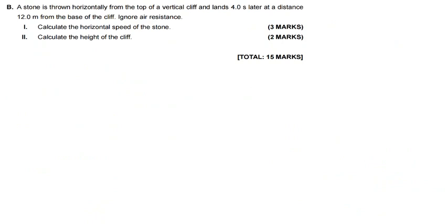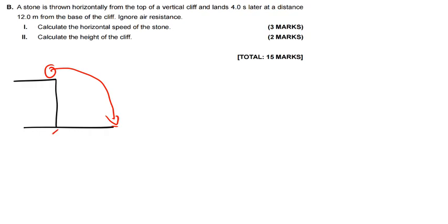The last part of question 2: a stone is thrown horizontally from the top of a vertical cliff and lands 4 seconds later at a distance of 12 meters from the base of the cliff. Ignore air resistance. This is Case 1 — you throw an object horizontally from a height. The time is 4.0 seconds and the range is 12 meters from the base of the cliff.